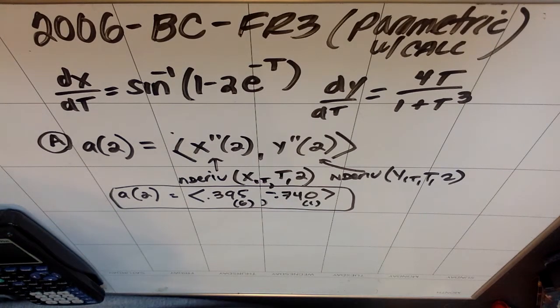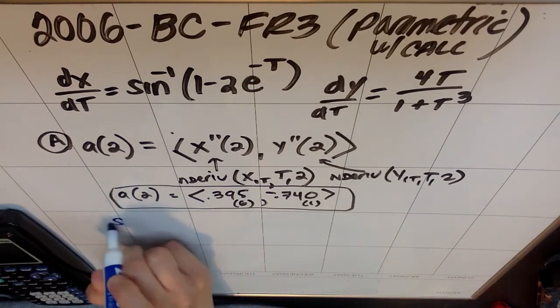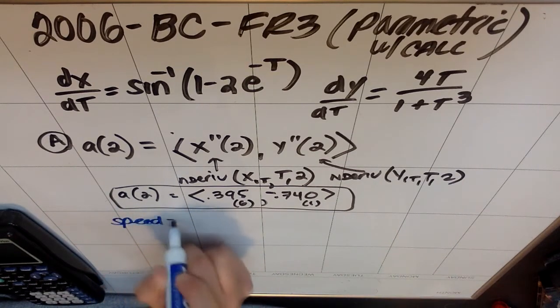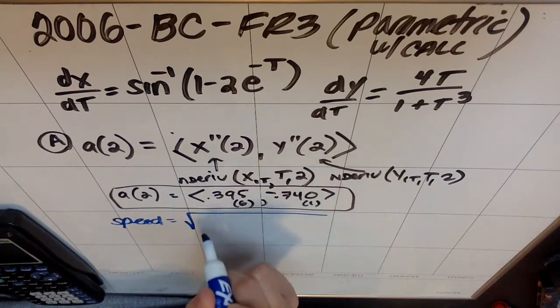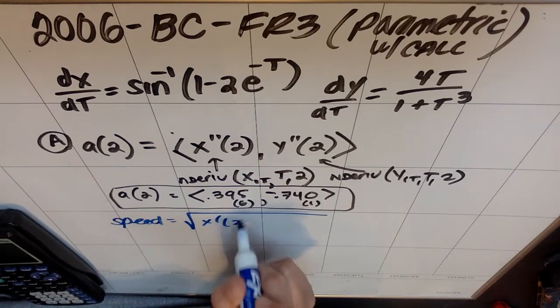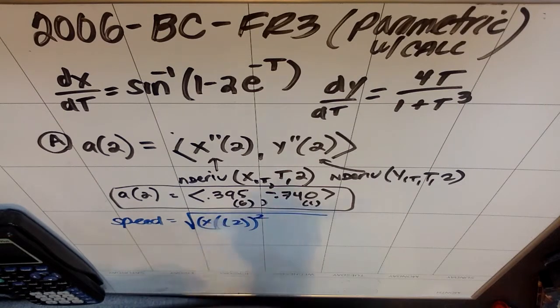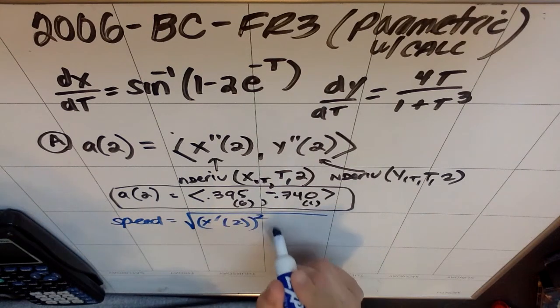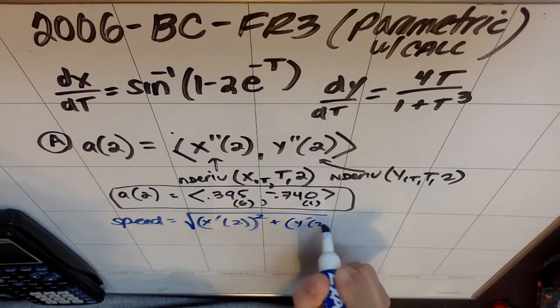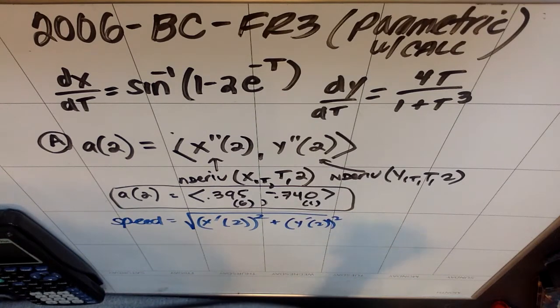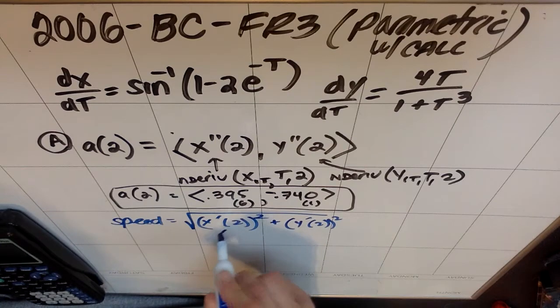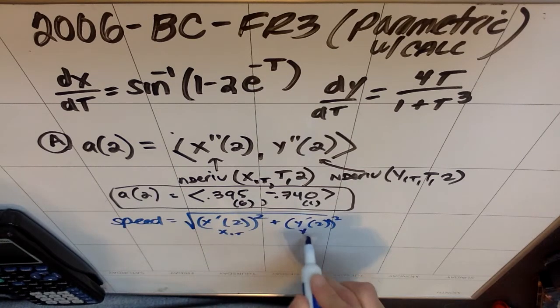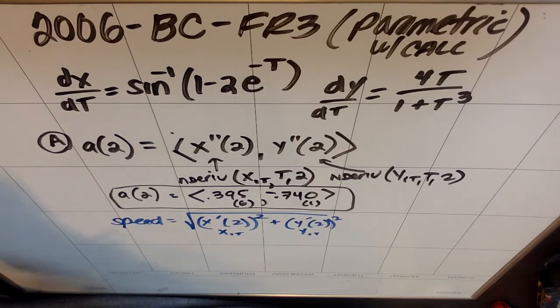Second prompt: find the speed of the object at that time. Well, I know that the speed at 2 should be the square root of x prime of 2 quantity squared plus y prime of 2 quantity squared. So I've shown you this trick a couple times before. You can find these values really easily.